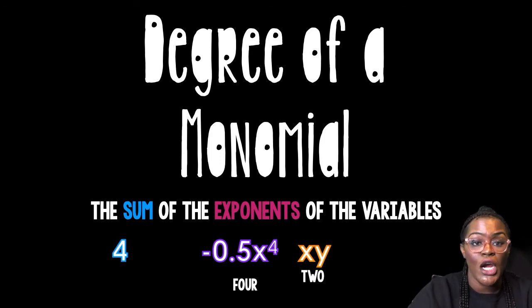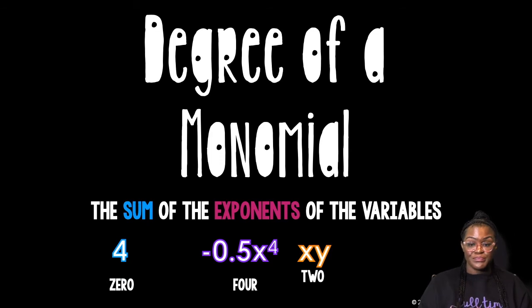Let's do 4. It is the sum of the exponents on the variables. Are there any variables next to that 4? Absolutely not. So 0. No variable, no degree. Or we say 0 degrees.